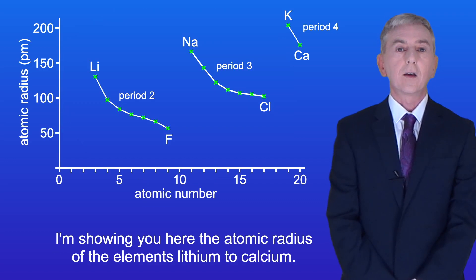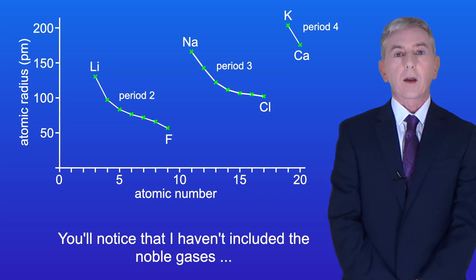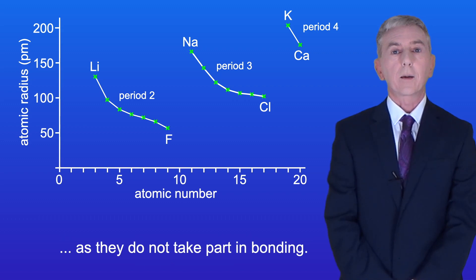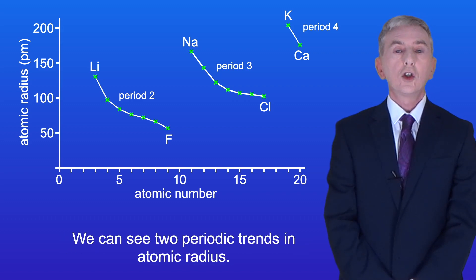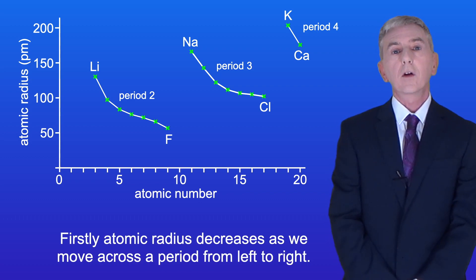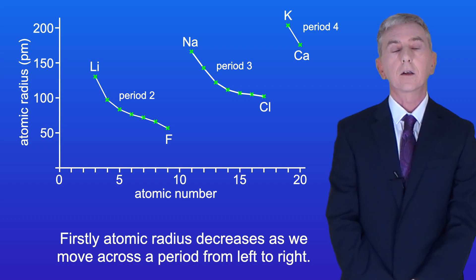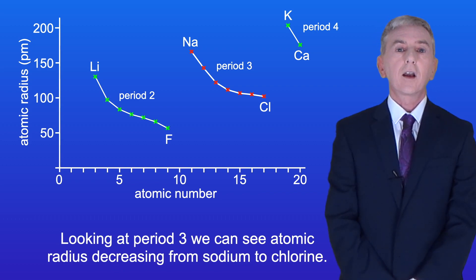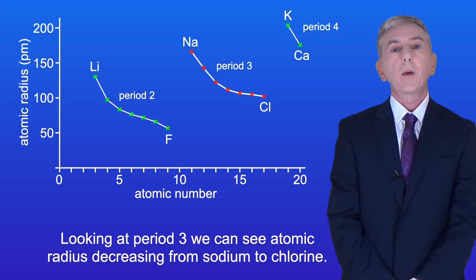I'm showing you here the atomic radius of the elements lithium to calcium. You'll notice that I haven't included the noble gases as they don't take part in bonding. We can see two periodic trends in atomic radius. Firstly, atomic radius decreases as we move across a period from left to right. Looking at period two we can see atomic radius decreasing from lithium to fluorine, and looking at period three we can see atomic radius decreasing from sodium to chlorine.